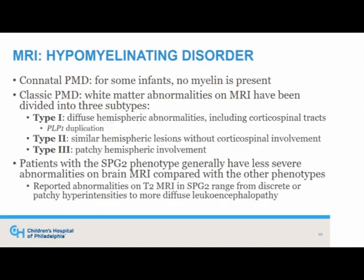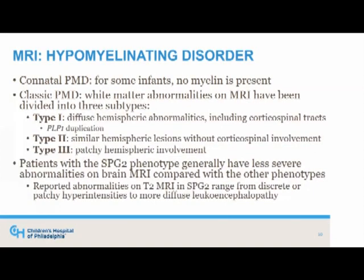Just to conclude the discussion on MRI, there's variability in the white matter in Pelizaeus-Merzbacher. For conatal patients, no myelin is present for most of these individuals. In some of the classic forms, the white matter abnormalities are diffuse throughout the hemispheres and involve the corticospinal tracts for many. But in some of the milder forms, you have more patchy hyperintensities or less diffuse changes throughout the brain.